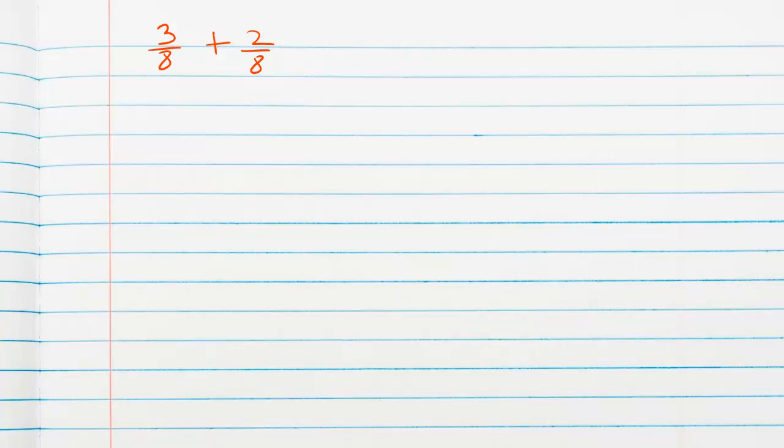In this video we will learn addition and subtraction of rational expressions. When we have two arithmetic fractions such as 3 over 8 plus 2 over 8, they have a common denominator which is 8, so we write 3 plus 2 over 8 and the answer will be 5 over 8.